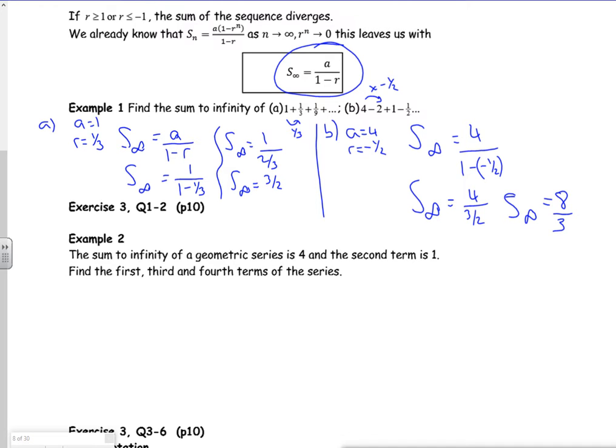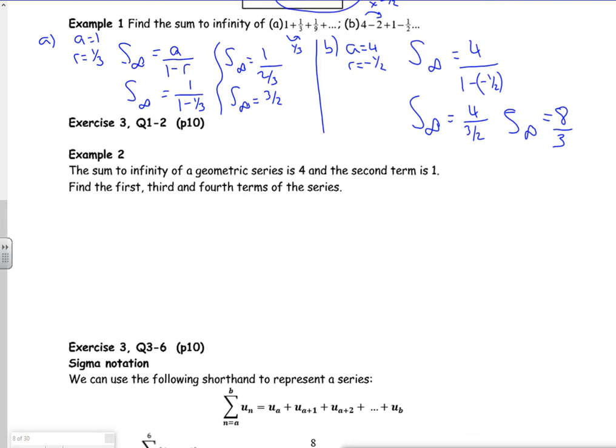Right, let's have a look at the second example then. So the sum to infinity is four. Right, so I know that the sum to infinity is four. The second term is one. Oh, what I should point out is sums to infinity are only for geometric, because you're timesing, aren't you?